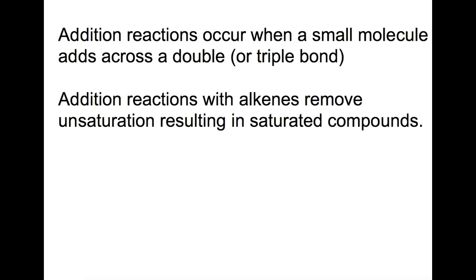Addition reactions with the alkenes remove the unsaturation that is present by saturating the double bond. We're going to look at three types of addition reactions today: hydrogenation, halogenation, and hydration.